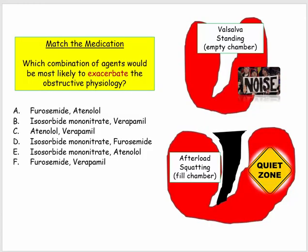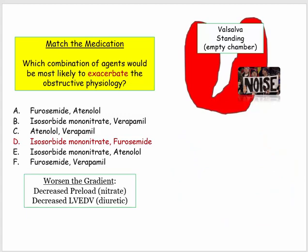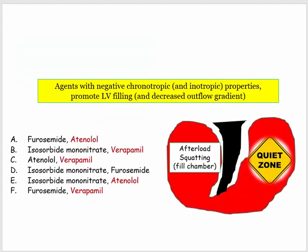Now applying pharmacological principles to the same concept: which agent or combination of agents exacerbates the outflow obstruction? You need to select the answer that will decrease left ventricular end-diastolic volume, thereby increasing the dynamic outflow gradient. Nitrates and diuretics will decrease preload and end-diastolic volume by differing mechanisms, but the result is the same — worsening of the obstructive physiology. Agents with negative chronotropic and inotropic properties promote LV filling and thereby decrease the outflow gradient.